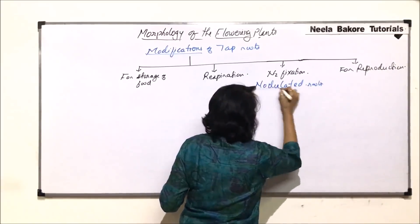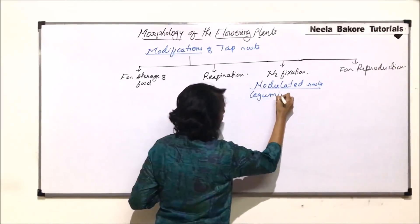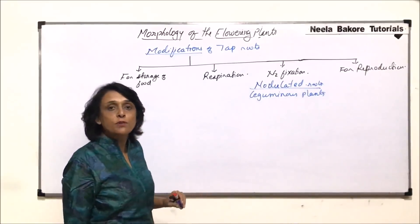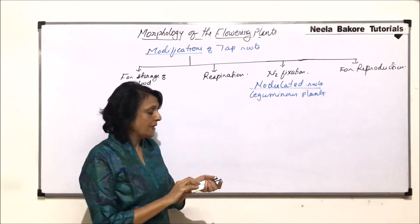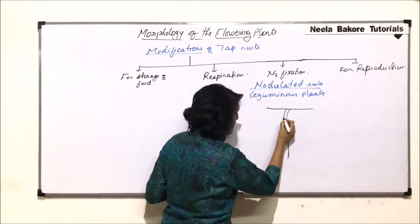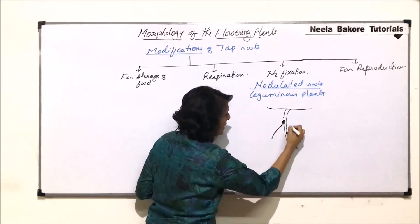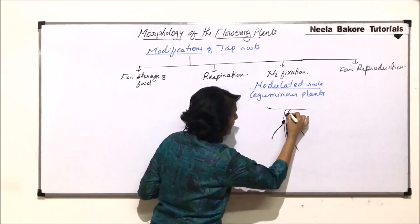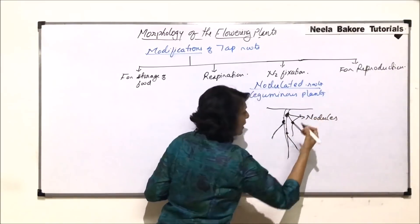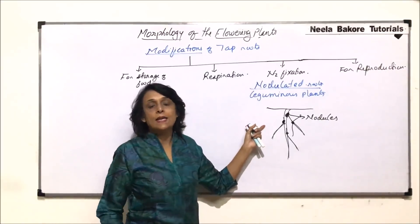This is a characteristic feature of leguminous plants. In leguminous plants, if you observe very carefully, like pea and gram, the roots have certain swellings at areas. This is the primary root with branches, and we find that there are some swellings. These swollen areas are called the nodules, and that is why the root is known as a nodulated root.